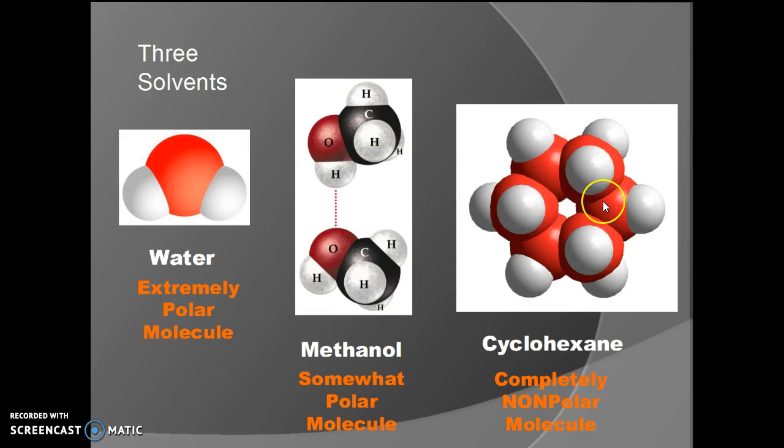Cyclohexane molecules have only minimal attraction for each other. You can see there's no polarity, so there's really nothing to keep one next to the next, except what we call instantaneous dipoles, and those are very small.